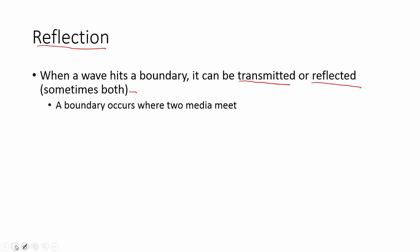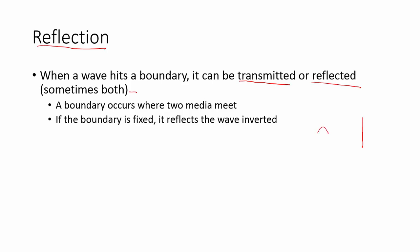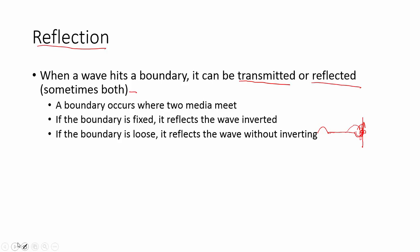If a wave hits a fixed boundary, it comes back inverted. In the lab you sent a single pulse down and it was clamped at the other end. When the wave gets to that clamped end, the wave pulls up on the clamp and the clamp pulls back down on the media, so it flips over. Newton's third law gives us that wave equal and opposite coming straight back. However, if there is an open loop and the end is free to move, the wave returns uninverted on the same side. On a fixed boundary the wave inverts; on a loose or open boundary it comes back without inverting.